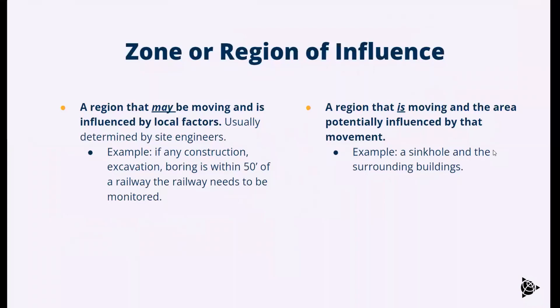I want to introduce the idea of two different types of zones or regions of influence. One is a region that we think has been static for most of its life, and then it may be moving because it's being influenced by local factors. This is really common to see in construction applications where you have something like a railway or a building that's been in the area for 50 years, never moved, never had any issues, never even been measured before. Then all of a sudden you're introducing some sort of construction or excavation, boring, drilling, whatever it might be in the area.